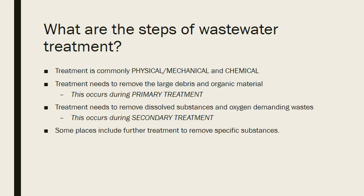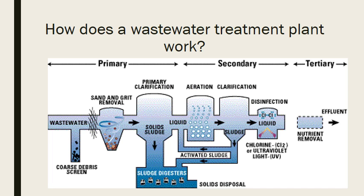When we talk about urban areas, we talk about the wastewater treatment plant. There are two basic steps of wastewater treatment. It is a physical, chemical, and biological process. To remove large debris and basics of organic material, you start with primary treatment. Removing dissolved substances and oxygen-demanding wastes is secondary treatment.